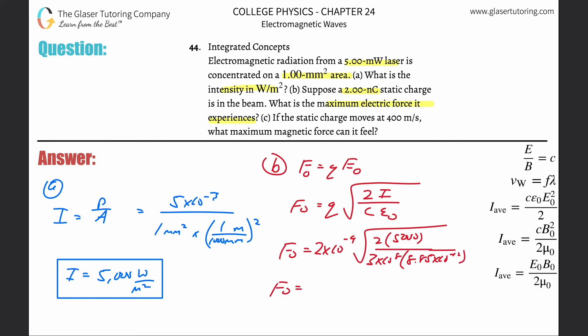So 2 times 10 to the minus 9 multiplied by square root of 2 times 5,000 divided by parenthesis 3 times 10 to the 8 times 8.85 times 10 to the minus 12. Close those parentheses. And here we go, 3.88 times 10 to the negative 6 newtons.